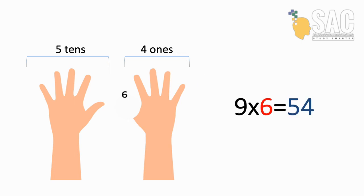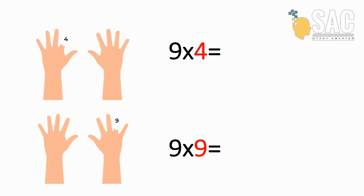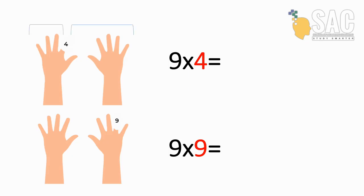How about these two examples? 9 times by 4. Fold your 4th finger, then count how many fingers on the left and right. 3 on the left, so 3 tens. 6 on the right, so 6 ones. So it will be 36.